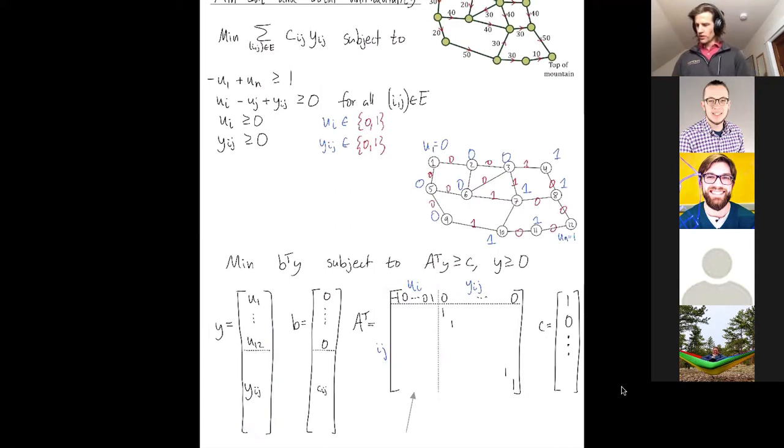Okay, so let's talk about the rows of A transpose. This first row just gives me this first constraint saying that the source and the sink vertices have to be in opposite components. I had to get my negative u1 plus un, and that has to be at least one. All of the other rows for this A transpose matrix are coming from this constraint. And so we have one of those constraints for each edge. So that's why the remaining rows are parameterized by the edges, directed edges. And for each directed edge I get this yij term after I multiply. But I also get a ui and a minus uj.